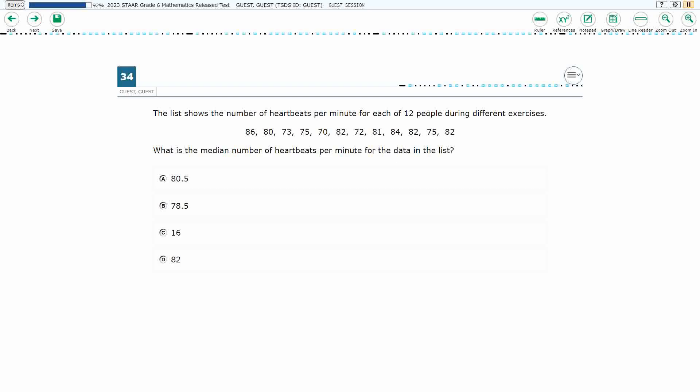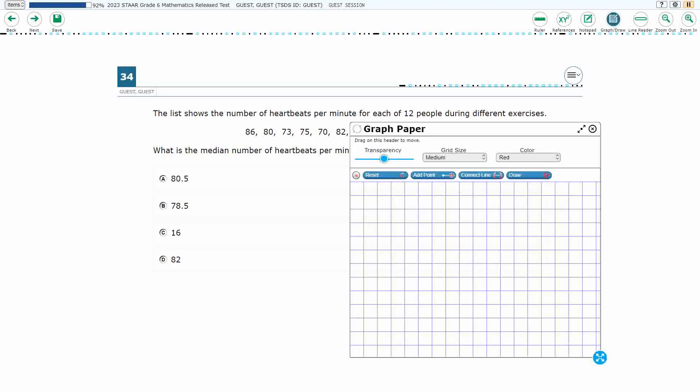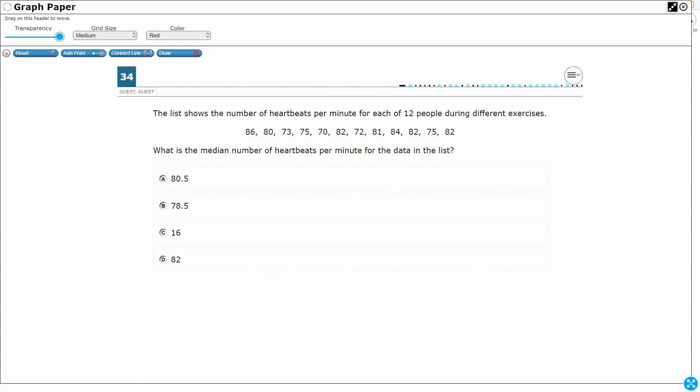So we've got a list showing the number of heartbeats for 12 people during different exercises. We simply need to find the median. So this is the word that this whole problem revolves around. What is the median? If we don't know what that is, it's not going to be on our reference materials.